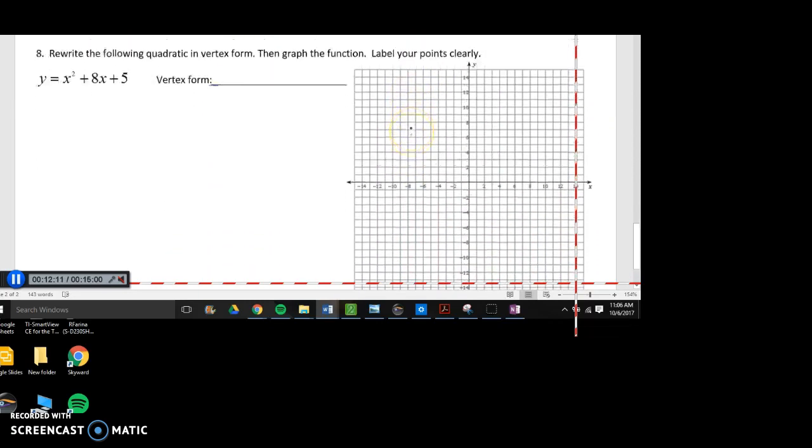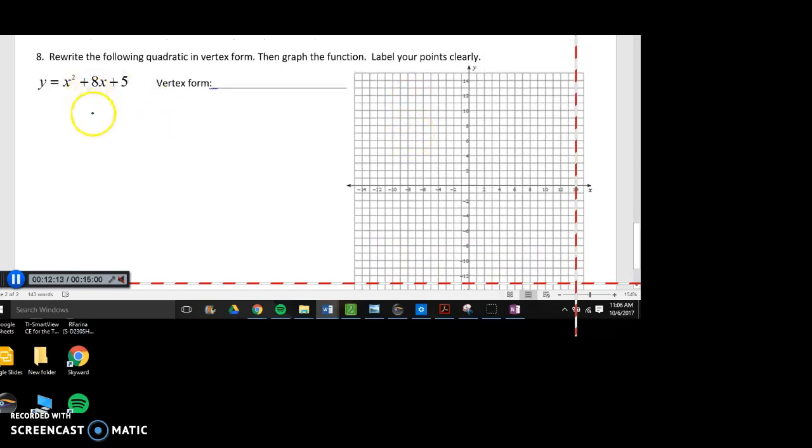Now, this last one. In order to graph, what do we do? I know this isn't a perfect square, because half of 8 is 4. 4 squared is 16. It doesn't match up. So, again, group the first two terms. x squared + 8x. Plus, I'm going to add something, and then I'm going to go ahead and subtract the same thing. So, 8 divided by 2 would give me 4. 4 squared is 16.